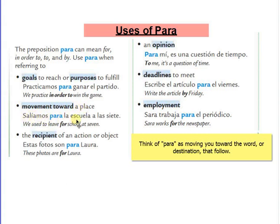Movement towards a place: Salíamos para la escuela a las siete. We also use para for the recipient of an action or object. Estas fotos son para Laura — you're going to give her something. The person who will receive something, you use para. For, in this case, is para.